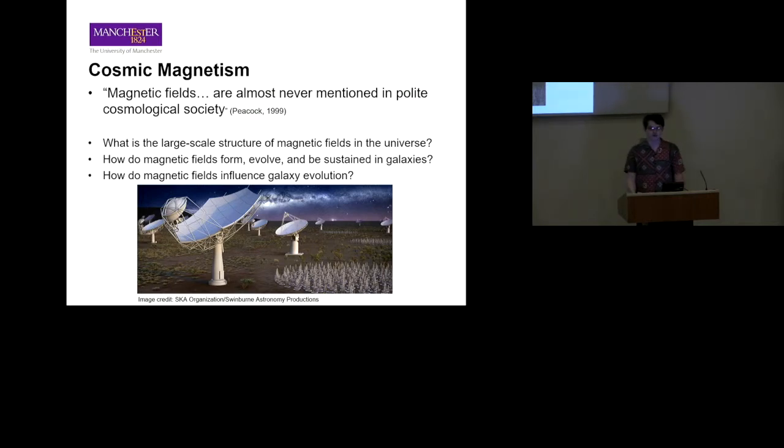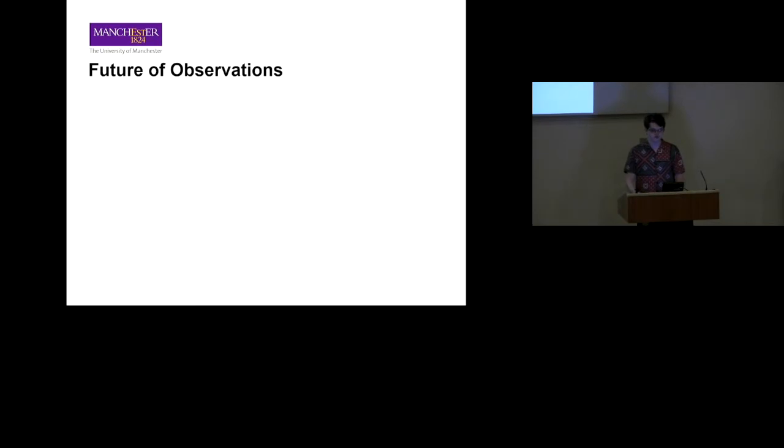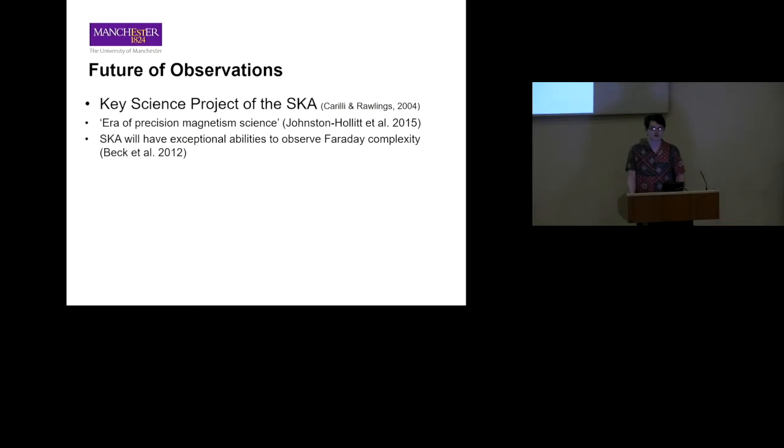Some big open questions include: What is the large-scale structure of magnetic fields in the universe? How do magnetic fields form, evolve, and be sustained in galaxies? And how do magnetic fields influence galactic evolution? It's an exciting time because there are many exciting future observations planned. The origin and evolution of magnetic fields is a key science project of the Square Kilometre Array, and we're entering the era of precision magnetism science, culminating with the SKA.